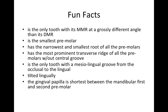Fun facts for the mandibular first premolar: it's the only tooth with a mesial marginal ridge at a grossly different angle than its distal marginal ridge. It's the smallest premolar with the narrowest and smallest root of all the premolars. It has the most prominent transverse ridge of all premolars without a central groove. It is the only tooth with a mesial lingual groove running from the occlusal down to the lingual. It is tilted lingually, and the gingival papilla is shortest between the mandibular first and second premolar.